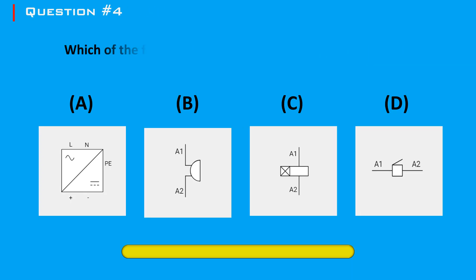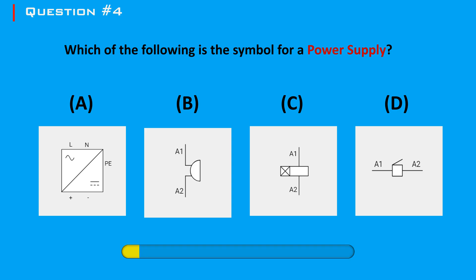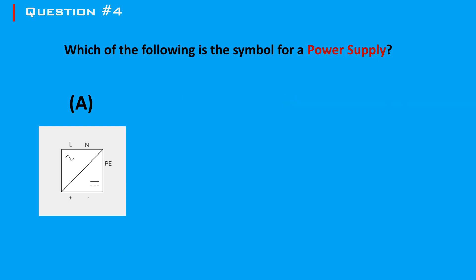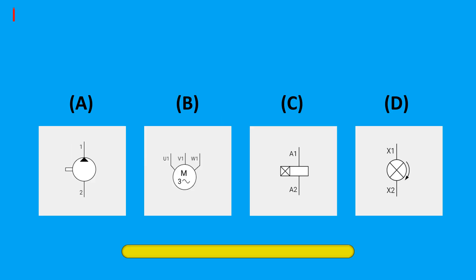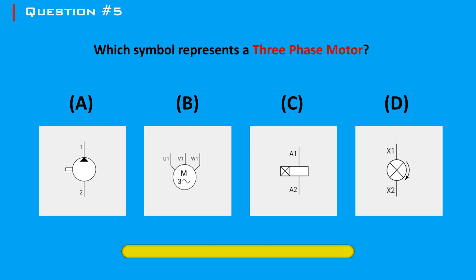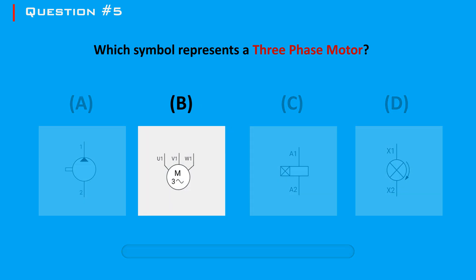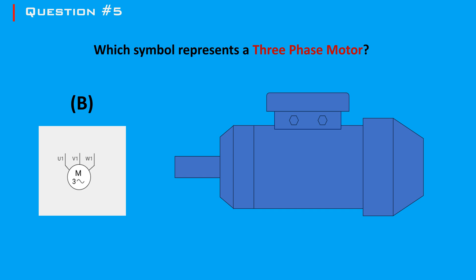Question 4: Which of the following is the symbol for a power supply? The answer is A. A power supply or rectifier is vital for converting AC to DC, ensuring that electronic devices receive the correct type of power to function properly. Question 5: Which symbol represents a three-phase motor? The answer is B. A three-phase motor is a type of electric motor that operates on three-phase alternating current (AC) power. It is widely used in industrial and commercial applications due to its efficiency and reliability. This type of device has two main parts: stator and rotor.